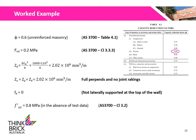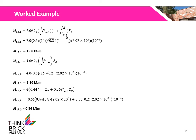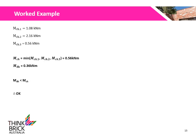The lateral modulus of rupture, FUt, shall be assumed to be 0.8 MPa due to the absence of test data. The horizontal bending moments are then calculated using the three equations: the first accounts for the compressive stress from the wall's self-weight and flexural strength of the masonry; the second accounts for flexural strength of the masonry; and the third accounts for the flexural strength of the masonry units and perpens. The horizontal bending moment capacity is calculated to be 0.56 kNm.